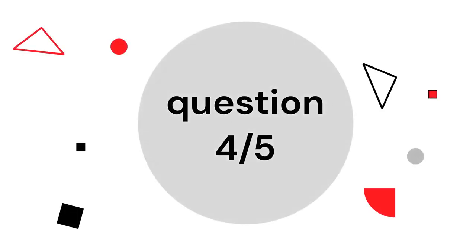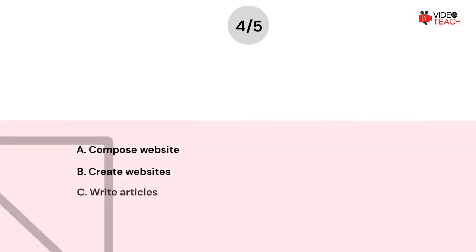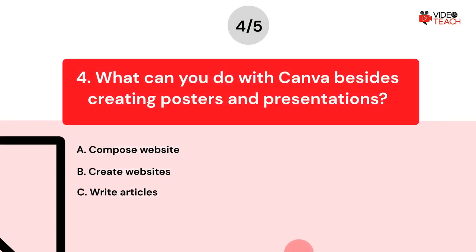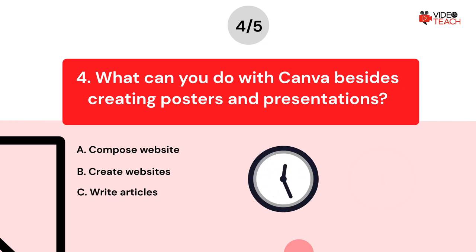Question number four. What can you do with Canva besides creating posters and presentations? Option A: Compose a website. Option B: Create websites. Option C: Write articles. Now you have about 15 seconds to think about your answer.